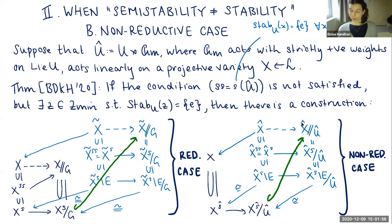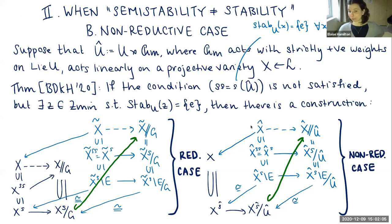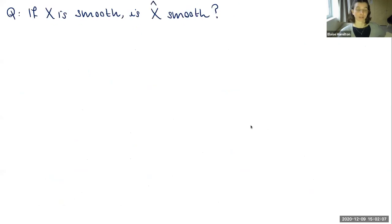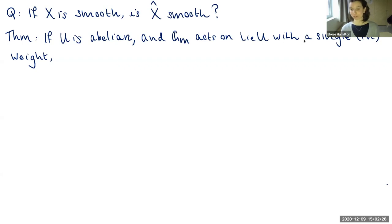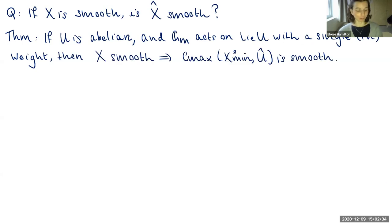If we want to work out the Poincaré series of this quotient, starting with X smooth, it's important that X̂ is also smooth. That is the key thing one needs to show in order to hope to get a nice formula. The theorem — stated under the simplifying assumptions that U is abelian and G_m acts on the Lie algebra of U with a single positive weight — is that if X is smooth, then the center of the first blowup is smooth.